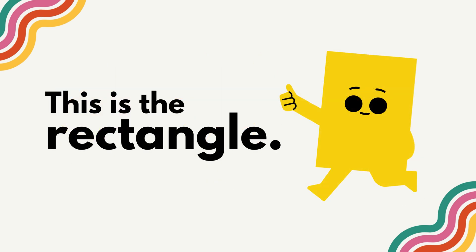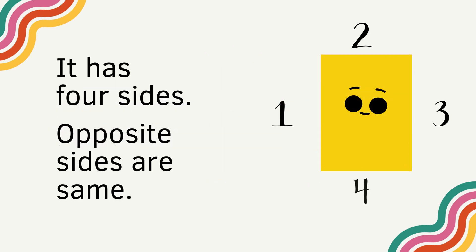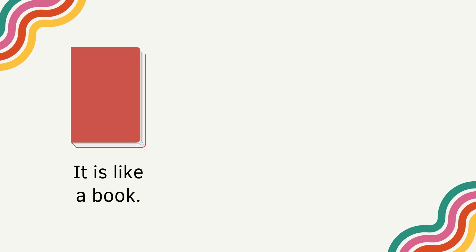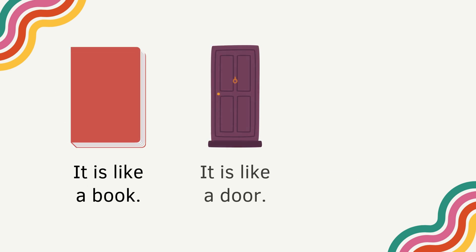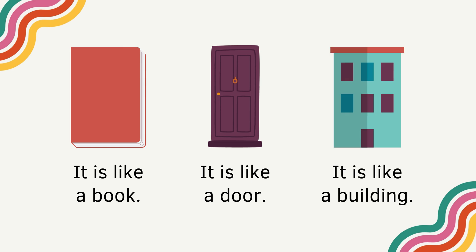This is the rectangle. It has four sides. Opposite sides are same. It is like a book. It is like a door. It is like a building.